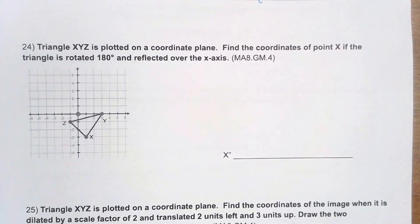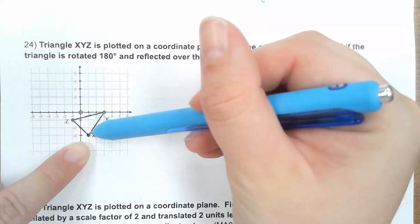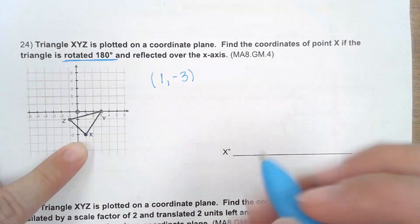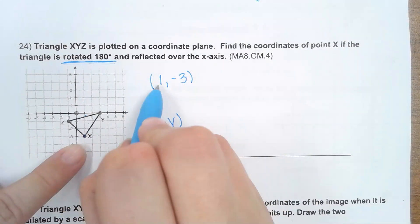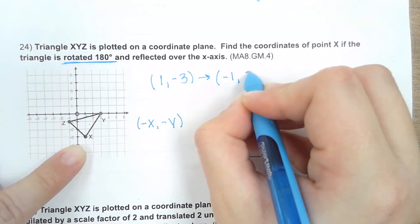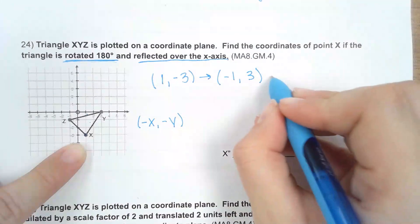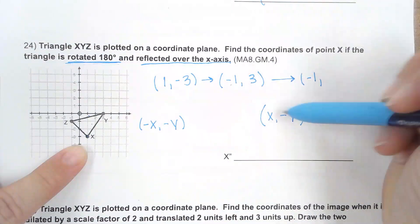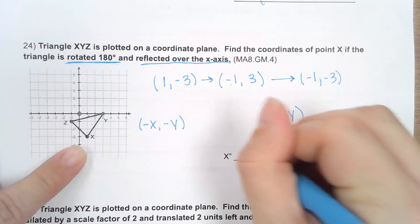Triangle XYZ is plotted on a coordinate plane. Find the coordinates of point X if the triangle is rotated 180° and then reflected over the x-axis. Point X is originally at (1, −3). For a 180° rotation, multiply both values by −1: 1 × −1 = −1 and −3 × −1 = 3, giving (−1, 3). Then reflecting over the x-axis means multiplying y by −1: x stays −1, and 3 × −1 = −3. So X double prime ends up at (−1, −3).